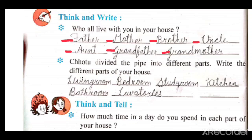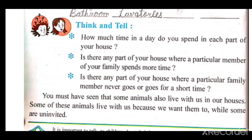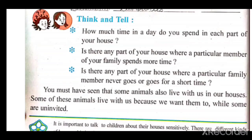Here three more questions are given. The first is: how much time in a day do you spend in each part of your house? I can say around the drawing room — two hours, kitchen — two hours, bedroom — eight hours, study room — three hours, bathroom and lavatories — half an hour. The second question is: is there any part of your house where a particular member of your family spends more time?